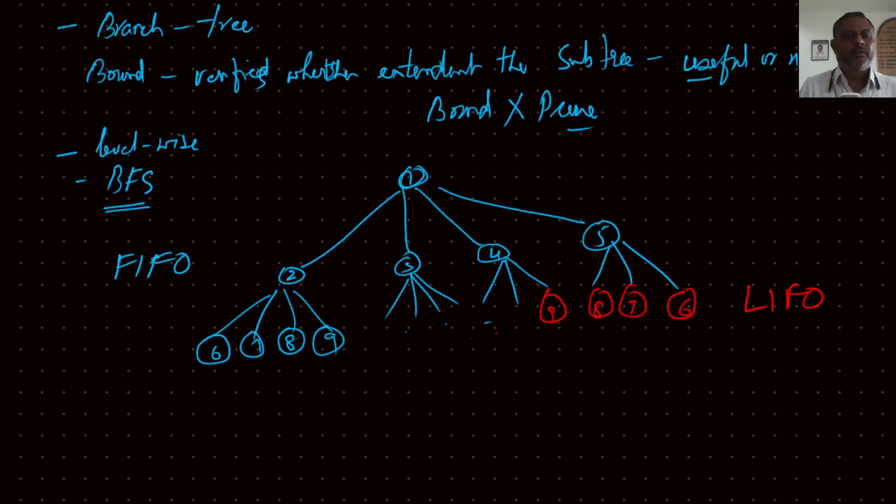And there can be one more where among all these things—among two, three, four, and five—if you just find out the cost function, then if you identify that the cost function of this is small, then this will be called. This will become six, seven, eight, and nine. After that, it is verified cost function of two, six, seven, eight, nine, four, and five. And among these all, whichever cost function is less, so it begins from there growing.